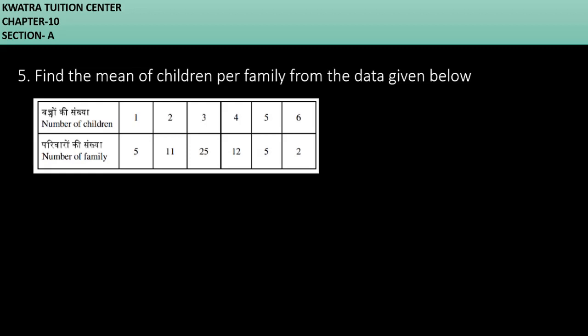Let's start with question number 5. It says find the mean of children per family from the data given below. So you have number of children and you have number of family. Now what do we need to find out the mean? You can see that there are very simple values, so we can find it from direct method.